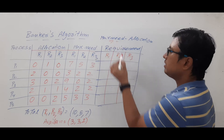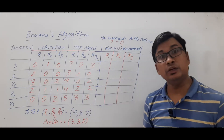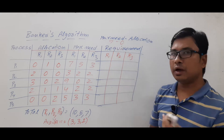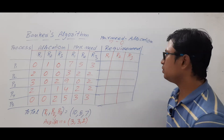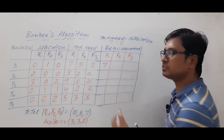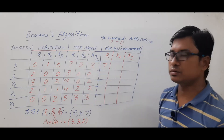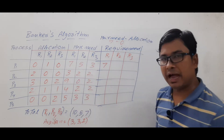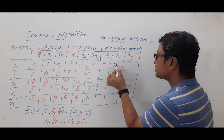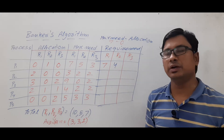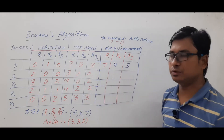For process P1: R1 max need is 7, allocation is 0, so requirement is 7. R2 max need is 5, allocation is 1, so requirement is 4. R3 max need is 3, allocation is 0, so requirement is 3. This means P1 still needs 7 more instances of R1, 4 more of R2, and 3 more of R3 to complete its task.